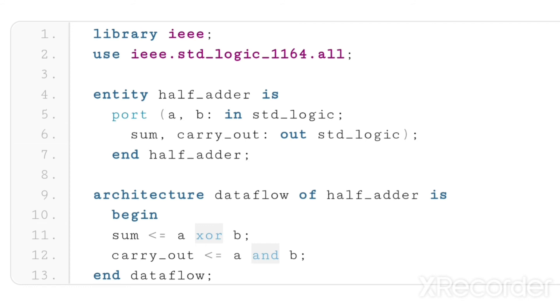Why am I writing architecture dataflow of half_adder? It means for the ports we're going to define, we are writing the logic here. That's why architecture dataflow is the name of the architecture, and half_adder is the entity name. This is how we can write the code for half adder using VHDL.